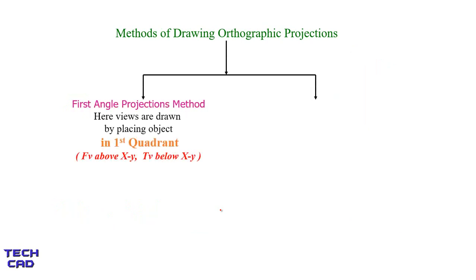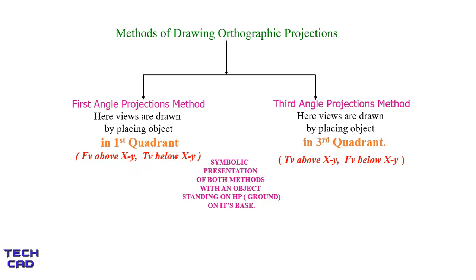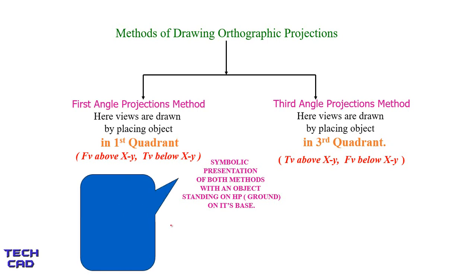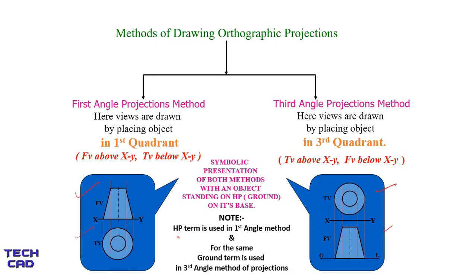What are the methods to draw orthographic projection? There are two methods: first is the first angle projection method and another is the third angle projection method. We always make drawings in first angle and third angle; we do not make drawings in second angle and fourth angle because it creates complexity. The symbolic representations of both methods show an object standing on HP. This is the symbolic representation of first angle projection, and this is third angle. I will explain how to draw these in another video.